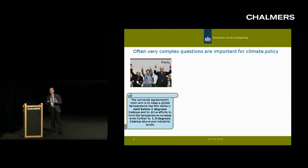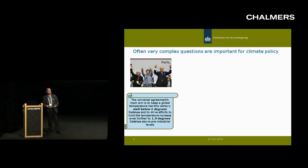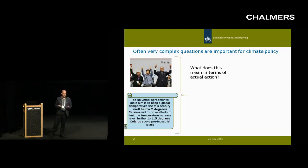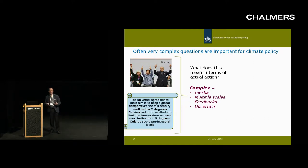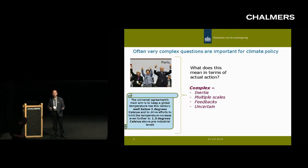Most of these models are looking into mitigation action and trying to evaluate different mitigation strategies. Let's assume for the moment that they are essentially looking into the question of how to reach the Paris target — how can we stay well below 2 degrees or even below 1.5 degrees. It's very clear that question is very complex. There are inertias involved; decisions today have a lot of influence on the long-term future. There are multiple scales: the grids, the cities, the sectors, the regions, and the world — and they are all somehow connected. Decisions made in one region might impact the cost of a certain technology and have influence in a second region.